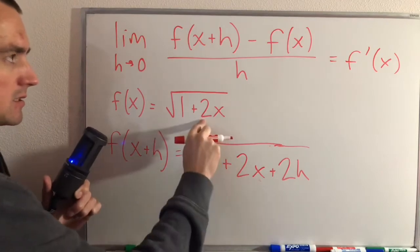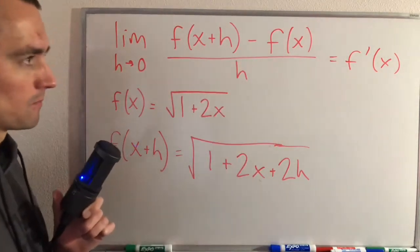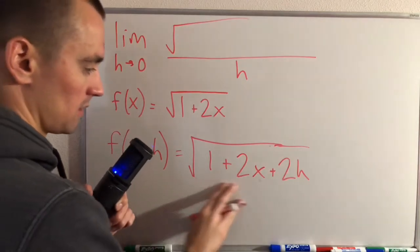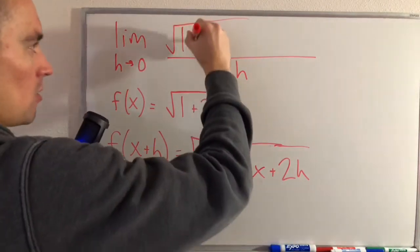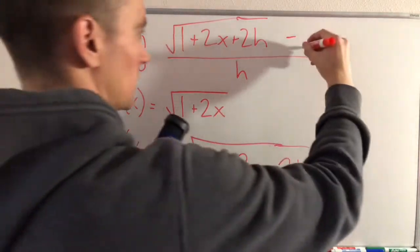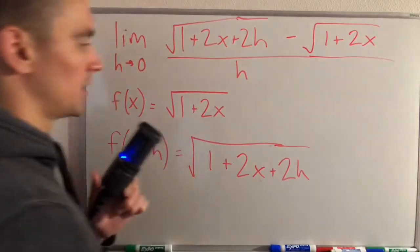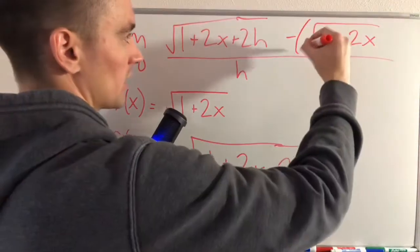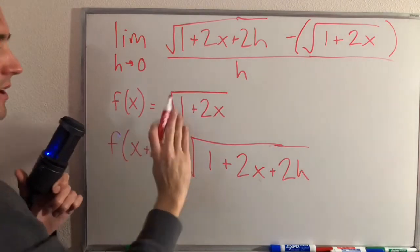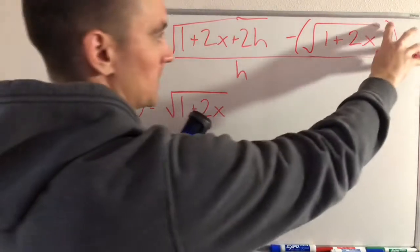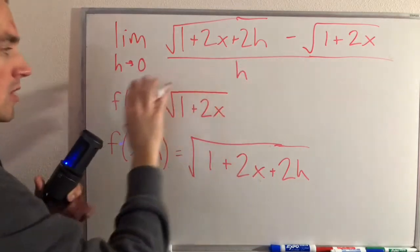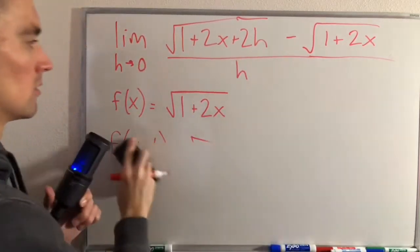Now we're going to take f of x plus h and f of x and plug them into the limit definition. So instead of f of x plus h minus f of x, we get the square root of 1 plus 2x plus 2h, minus the square root of 1 plus 2x. A general rule of thumb is to put f of x in parentheses when subtracting it, though in this case the minus sign essentially just distributes to the square root. So now we know this limit is what f prime of x equals.